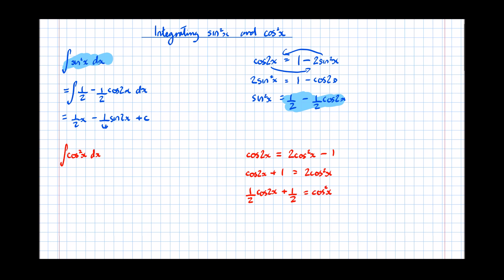Again, we've got something we couldn't integrate and we're able to replace it with something we can integrate. So that becomes the integral of one half cos(2x) plus one half dx, which equals one quarter sin(2x) plus one half x, plus c.